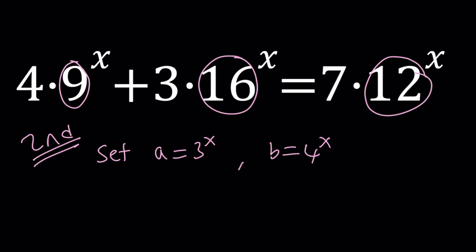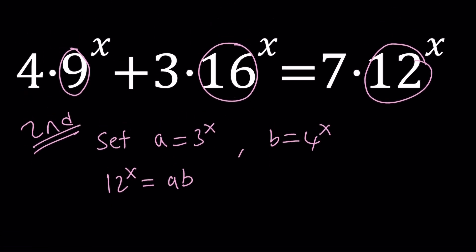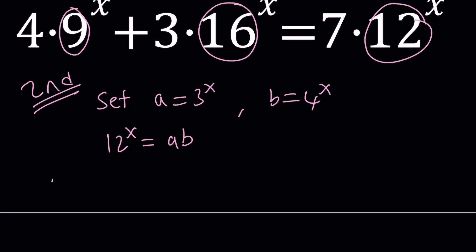That's why we're using substitution as the second method. So from here, obviously, when you set this, 12 to the power x is just going to be a times b, right? Because 3 times 4 is equal to 12. So let's go ahead and plug it in. And 9 to the power x is just going to be a squared. So we're going to get 4a squared plus 3b squared equals 7ab.